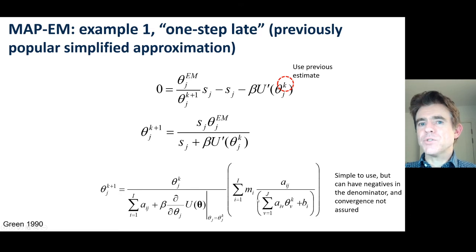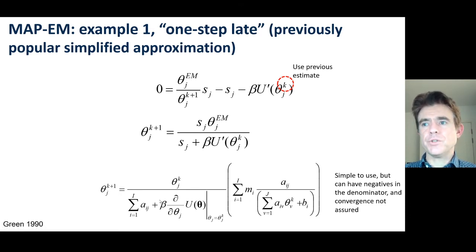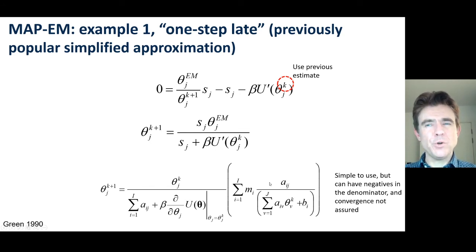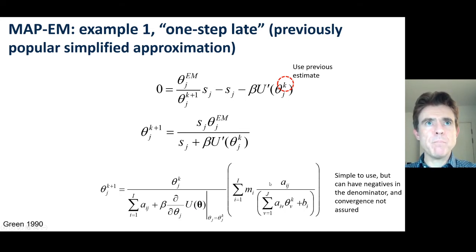That can be a problem: this method is not guaranteed to converge, because you could have negatives in the denominator if you're not careful. So this method is not really recommended but can be a good starting point for working with MAP reconstruction.